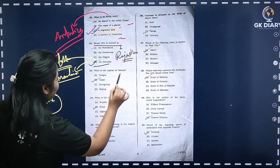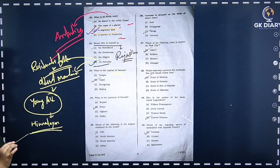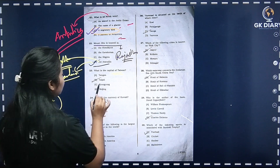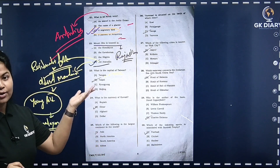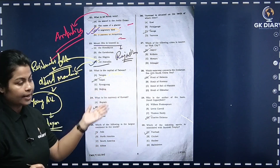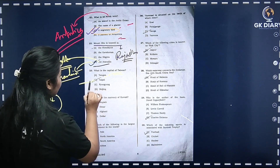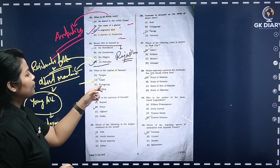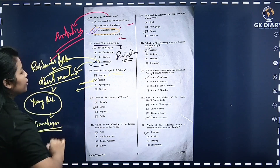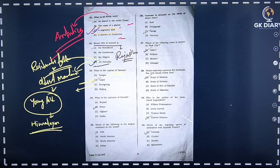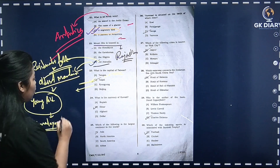Next question: What is the capital of Taiwan? Option A is cut, option B is Taipei — the pronunciation is Taipei. So the correct option is B. Option D is Pyongyang. Pyongyang is the capital of North Korea.